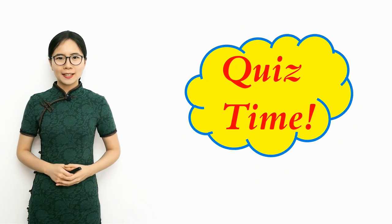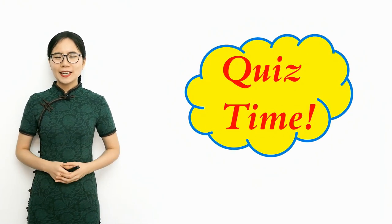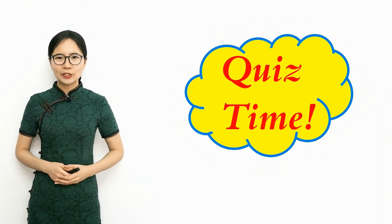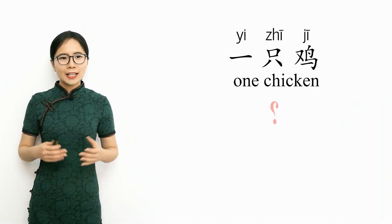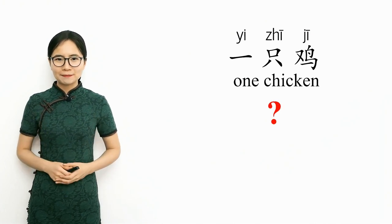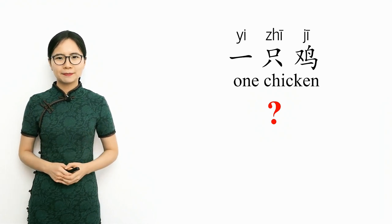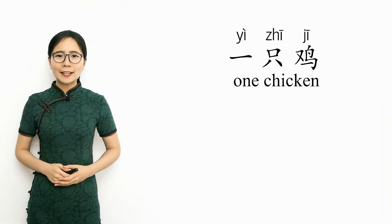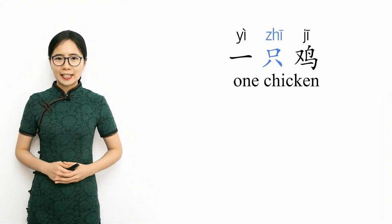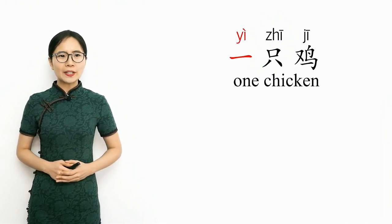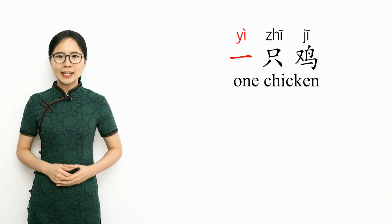Let's have a quiz. In the phrase that means one chicken, does the 'let it be Yi' rule apply? What tone should Yi have? Correct — Yi is followed by the measure word zhi, so the rule does not apply. Zhi uses the first tone, so Yi should be pronounced with the fourth tone, the falling tone: Yi zhi ji, one chicken.